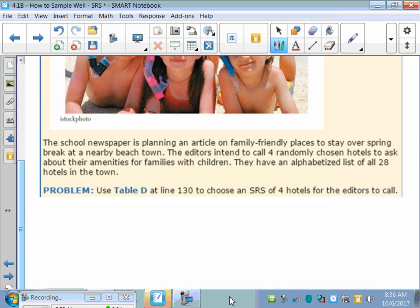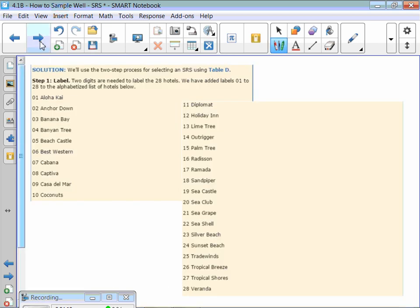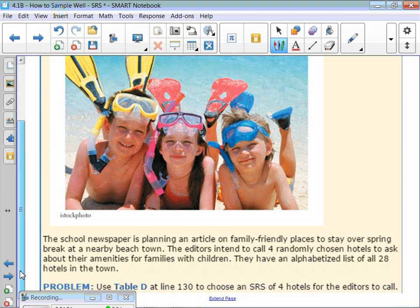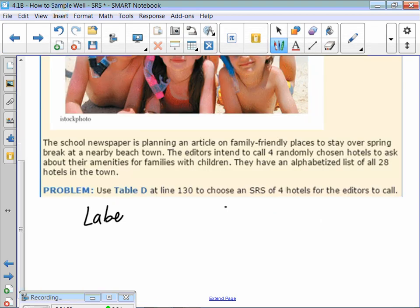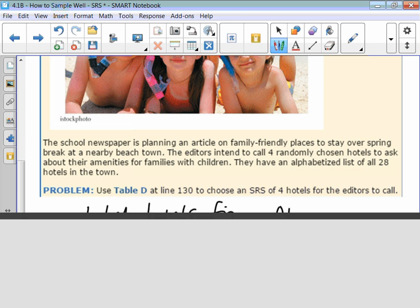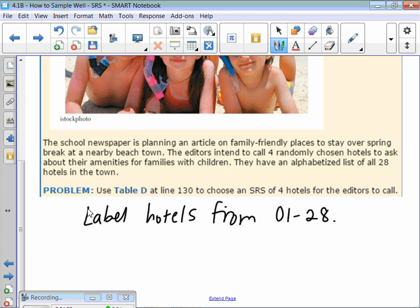The school newspaper is planning an article on family-friendly places to stay over spring break at a nearby beach town. The editors intend to call four randomly chosen hotels to ask about their amenities for families with children. They have an alphabetized list of 28 hotels in the town. Use Table D at line 130 to choose a simple random sample of four hotels. What is the first step? Label them. You're going to actually say label the hotels from 01 to 28.